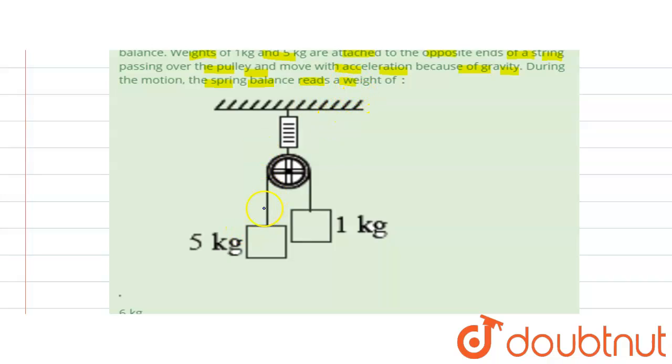In that case, we see the tension T here and here. This weight is downward, 1 times g, and here this weight is 5 times g. The acceleration here is in the downward direction, and this acceleration moves in the upward direction. Now we can write the equations.